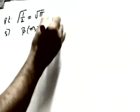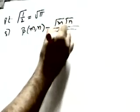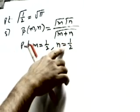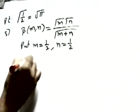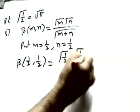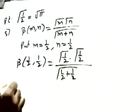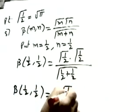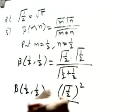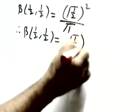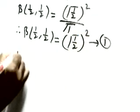Next proof: Γ(1/2) equals √π. Method one uses the relation between beta and gamma: beta of m comma n equals Γ(m) Γ(n) / Γ(m+n). Put m = n = 1/2: beta of (1/2, 1/2) equals Γ(1/2) times Γ(1/2) divided by Γ(1), which is Γ(1/2)² since Γ(1) = 1. Note this as equation (1).